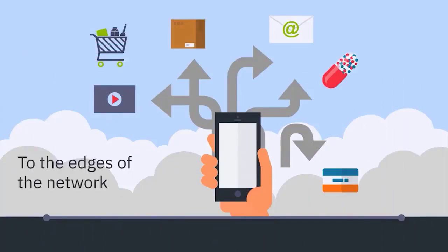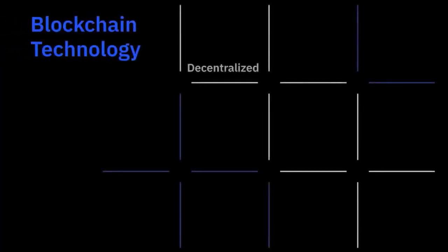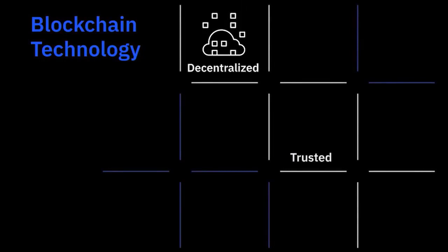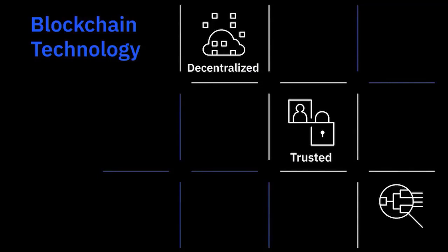The end result: moving control points for identity to the edges of the network, giving more control to people, organizations, and connected devices where trust cannot be compromised. Blockchain technology accelerates decentralized identity models by providing a web of trust, as people, organizations, and connected devices establish and share their own identity — created by them and verified by relationships.